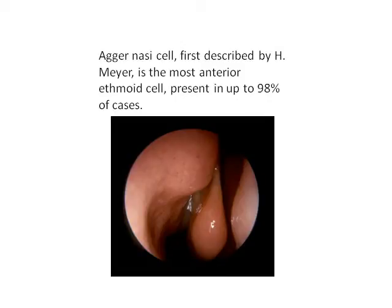The agar nasi cell was first described by H. Muir. It is the most anterior of the ethmoidal cells.